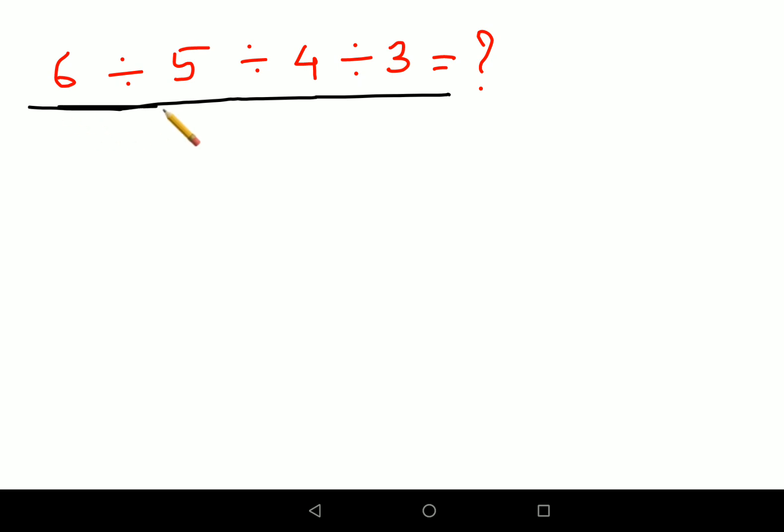Please remember, whenever you have a question with a division sign, you can write the first number as it is and change the division sign to multiplication. When you do that, the next number has to be written in its reciprocal form. The reciprocal of 5 is 1 upon 5.